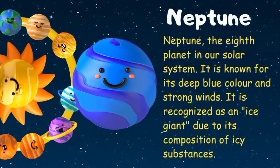Neptune is the eighth planet in our solar system. It is known for its deep blue color and strong winds. It is recognized as an ice giant due to its composition of icy substances.